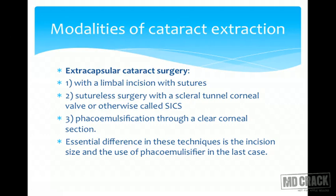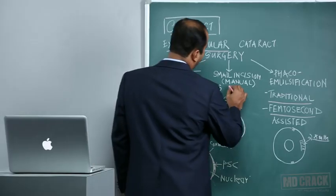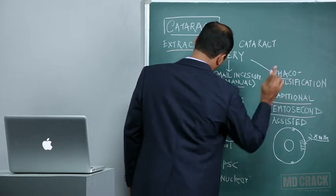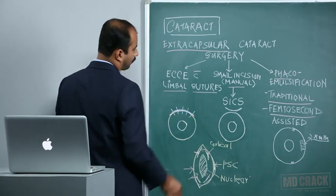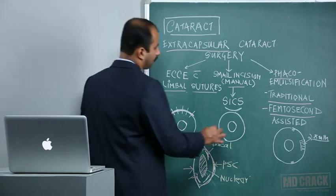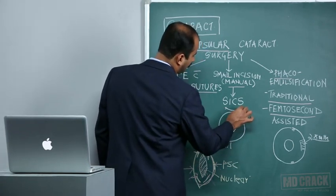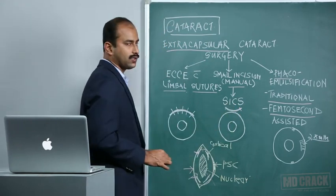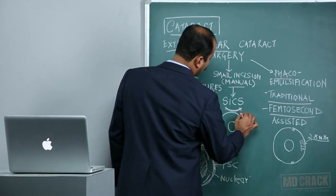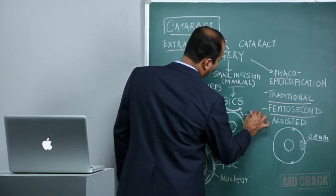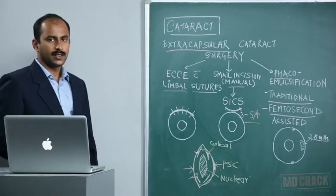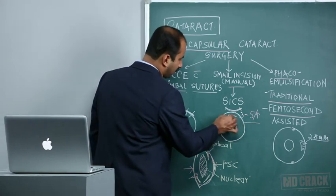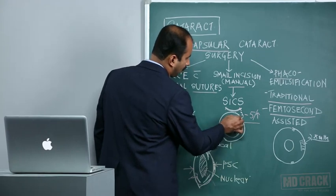The three modalities of cataract surgery are: extracapsular surgery with limbal sutures, manual small incision surgery, and phacoemulsification. The essential difference among these is the incision size. ECCE with limbal sutures requires a large limbal incision of around 120 degrees of arc. Small incision cataract surgery uses a curvilinear scratch incision on the sclera of partial thickness, ranging from three to five millimeters or more depending on surgeon preference; in this technique the entire endonucleus is delivered out of the eye in one piece.